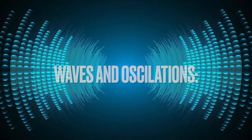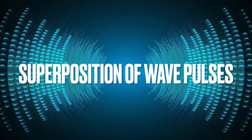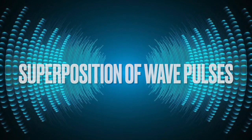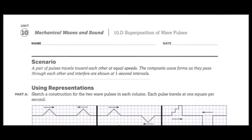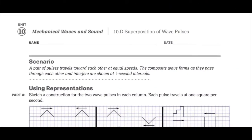This problem is about mechanical waves and sound, specifically superposition of wave pulses and amplitude. First, let's read the problem. Scenario: A pair of pulses travels toward each other at equal speeds. The composite wave forms as they pass through each other and interfere are shown at one second intervals. Using representations, sketch a construction for the two wave pulses in each column. Each pulse travels at one square per second.